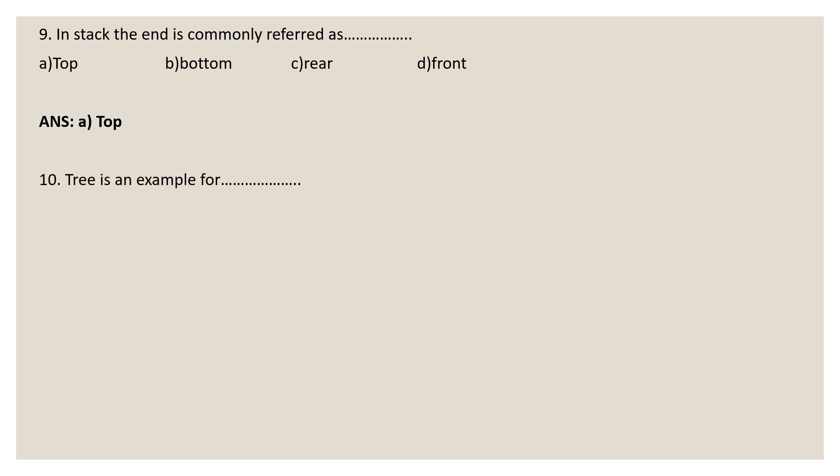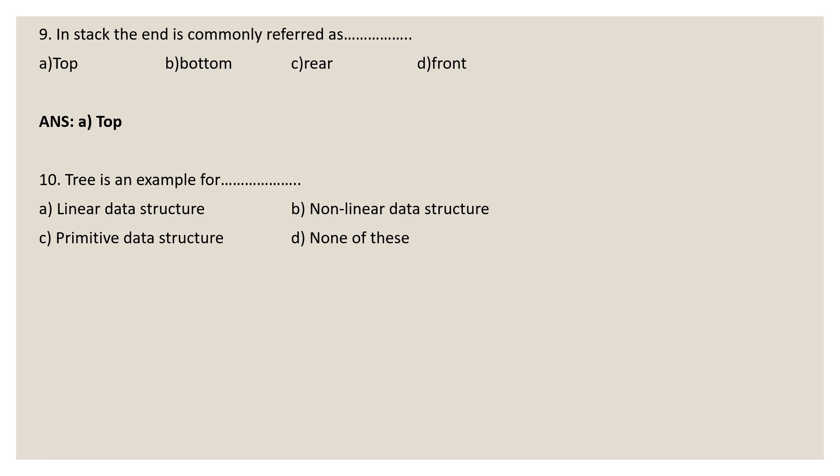Question 10: a tree is an example of what? Options: A) linear data structure, B) non-linear data structure, C) primitive data structure, D) none of these. The correct answer is option B: non-linear data structure, because in a non-linear data structure, a data item is connected to other data items through a link with a hierarchical relationship. A tree is an example of a non-linear data structure.